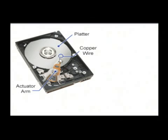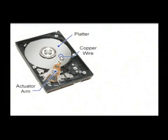This little platter spins inside of the hard drive, and while it's spinning, this actuator arm moves along the surface of the hard drive to the point where it wants to load data. Right here on the tip is a little copper wire that actually touches the platter, and it will read data from that magnetic strip on top of each of these platters. That's how the computer loads in data.